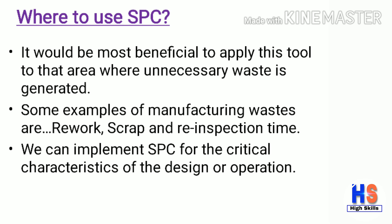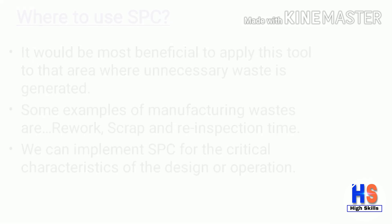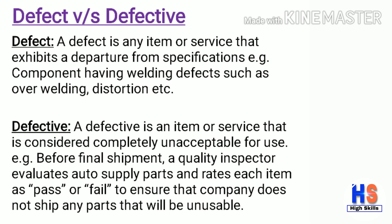It is very important for us to understand where to use SPC. It is most beneficial to apply this tool to areas where unnecessary waste is generated. Some examples of manufacturing waste are rework, scrap, and re-inspection time. We can implement SPC for the critical characteristics of the design or operation, such as critical-to-quality characteristics.